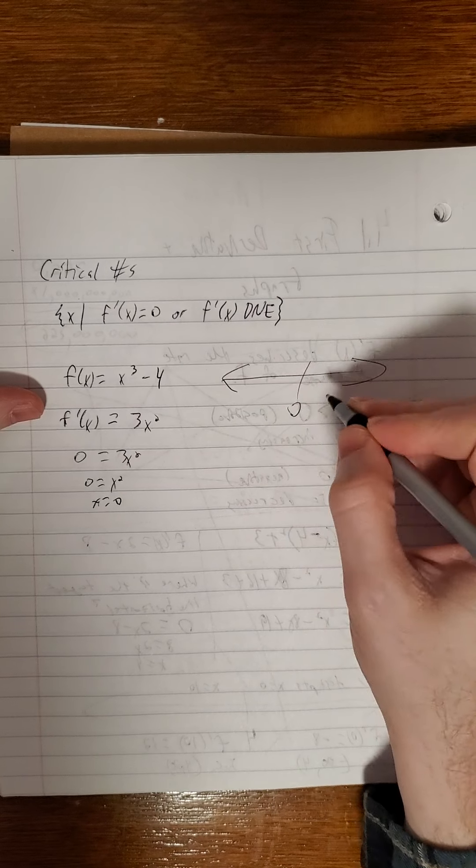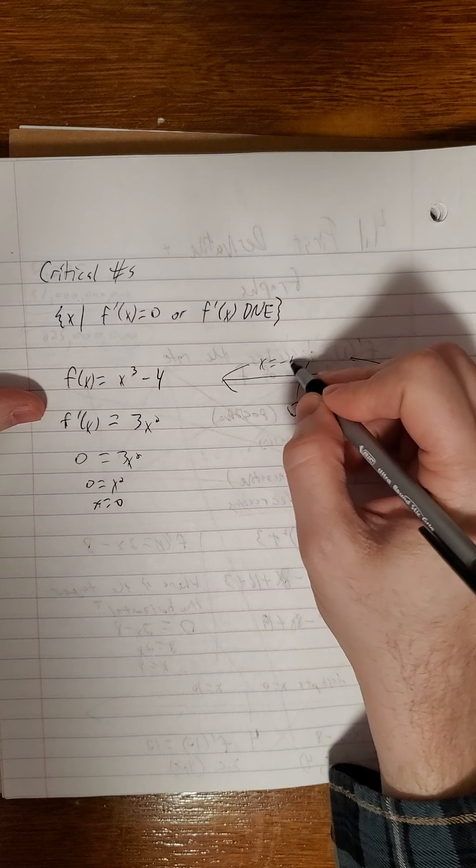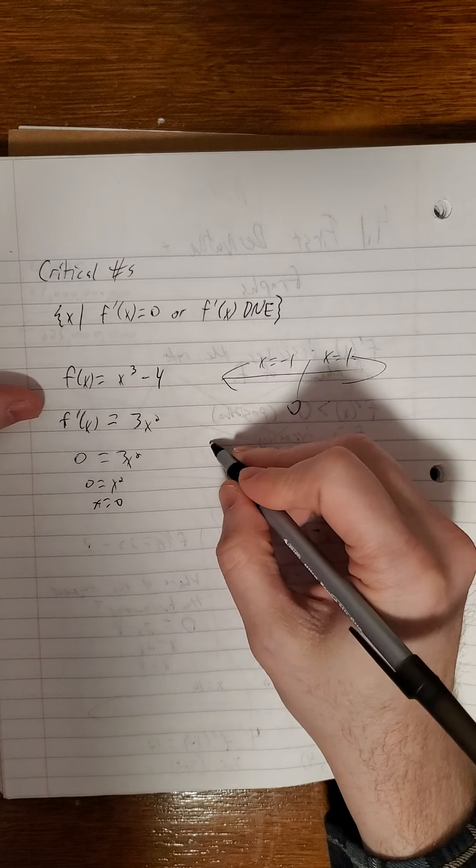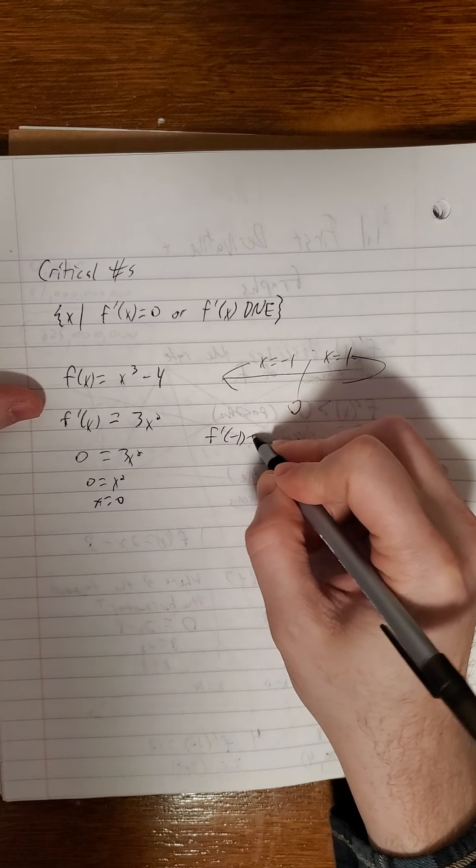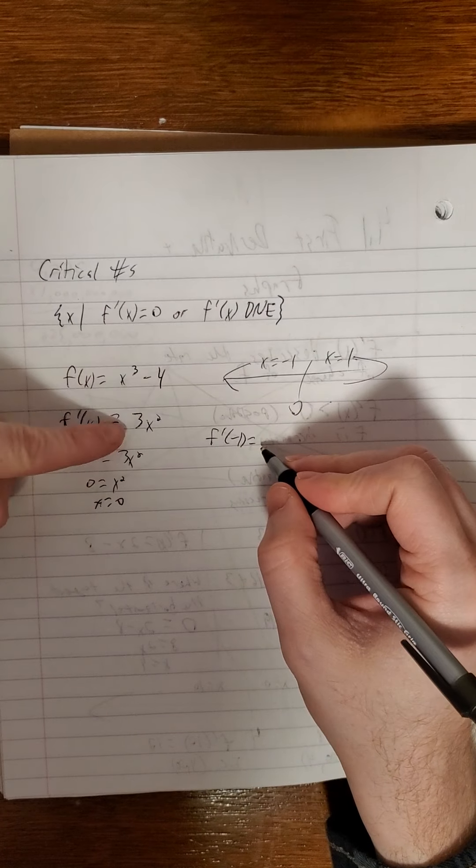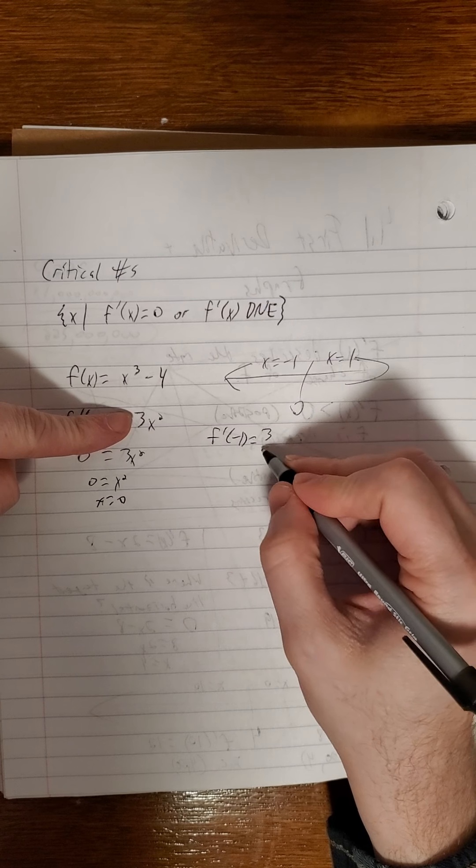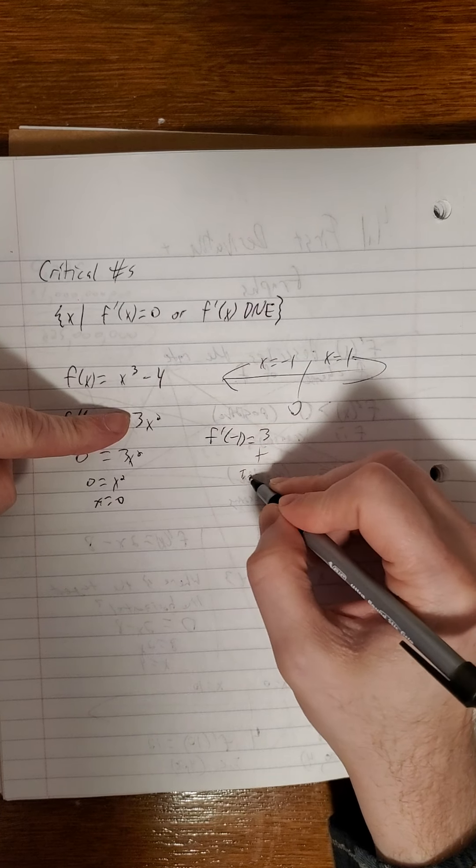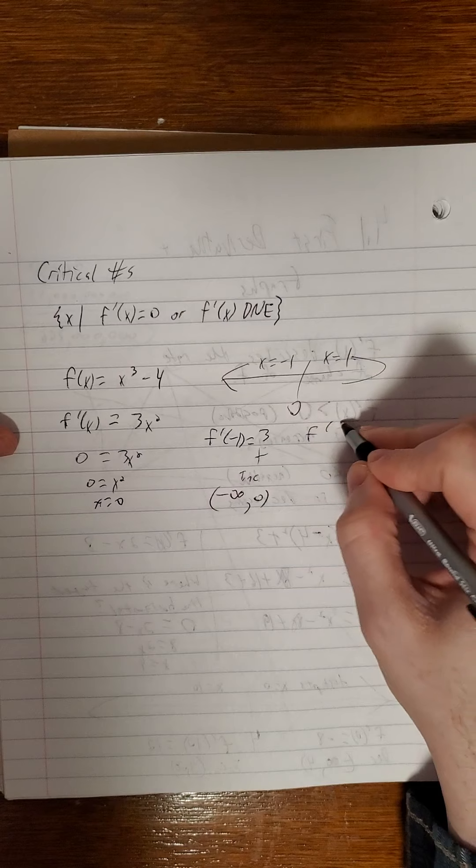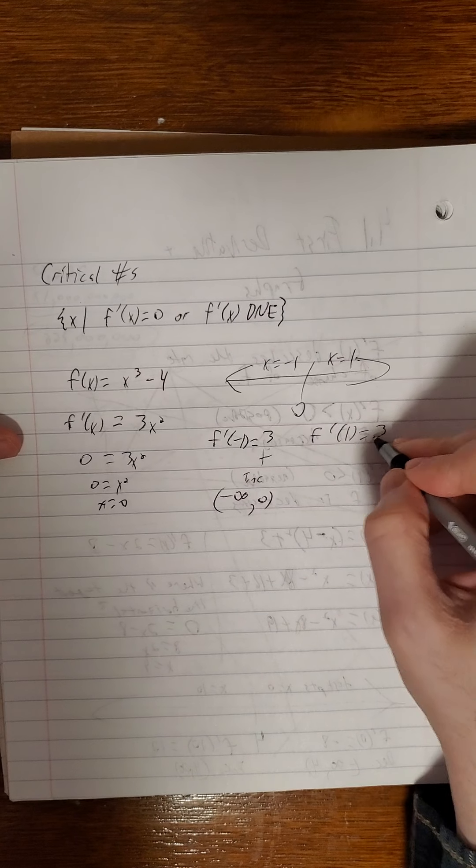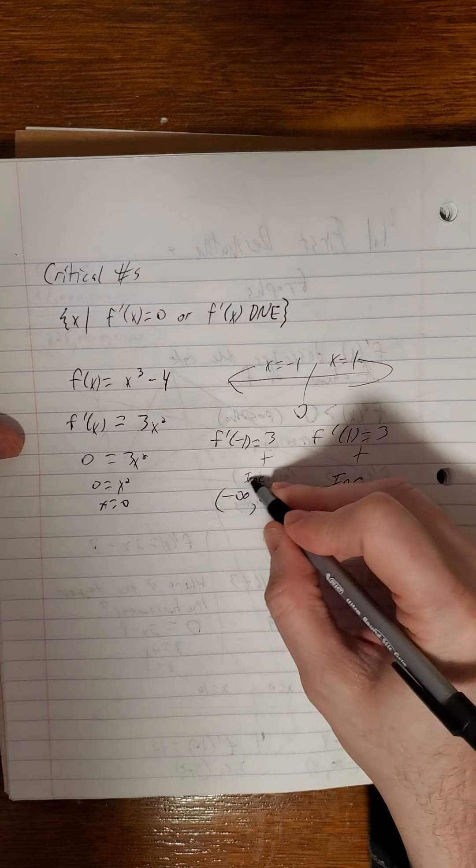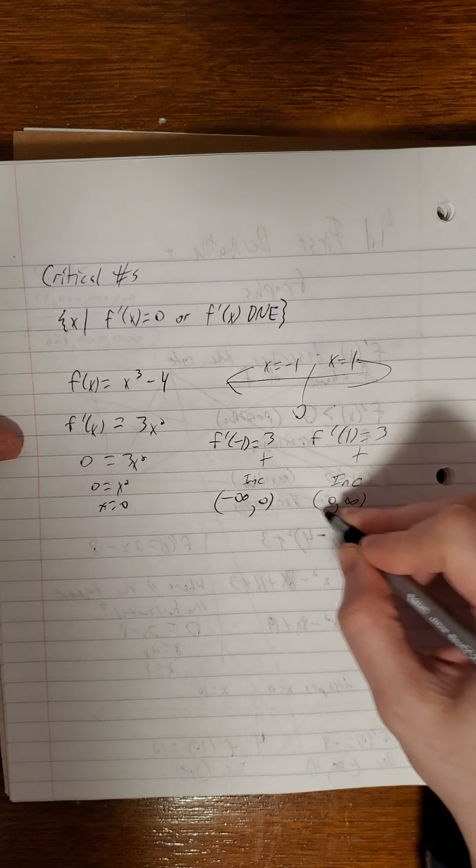So I'll just make a quick sketch of my number line and pick out my two test points, one on either side. So f prime of negative 1 is positive 3. Positive, this is increasing negative infinity to 0. f prime of positive 1 is also positive 3. So we are also increasing on 0 to infinity.